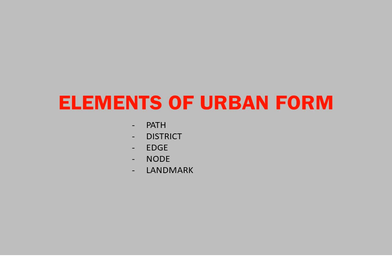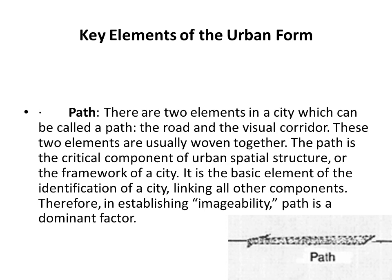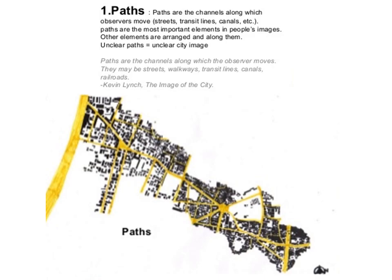As described by Kevin Lynch, these are the five elements of urban form: Path, District, Edge, Node, and Landmark. Now let us go through each element in detail. There are two elements in a city which can be called path: the road and the visual corridor. These two elements are usually woven together. The path is the critical component of urban spatial structure, or the framework of a city. It is the basic element of identification of a city, linking all other components. Therefore, in establishing imageability, path is a dominant player.